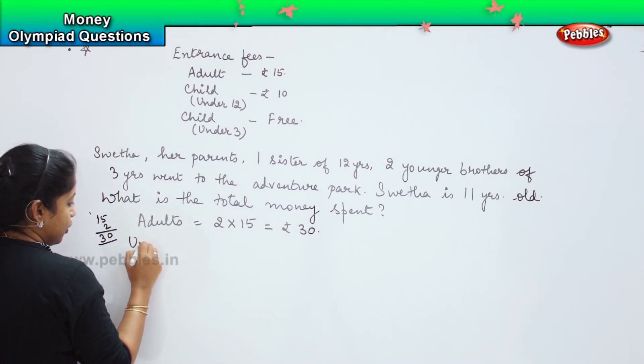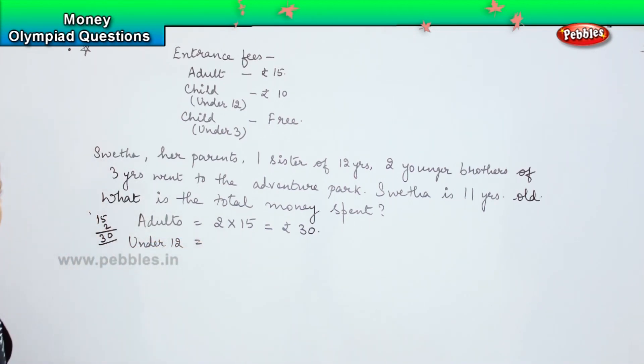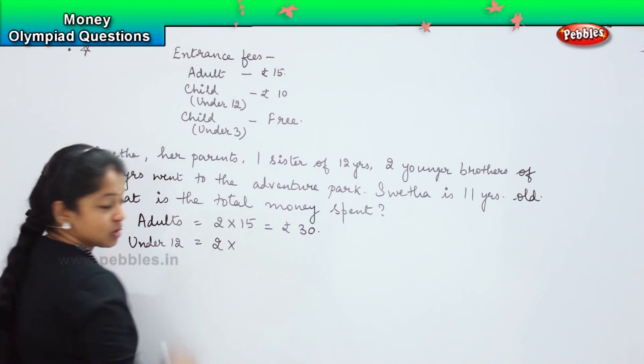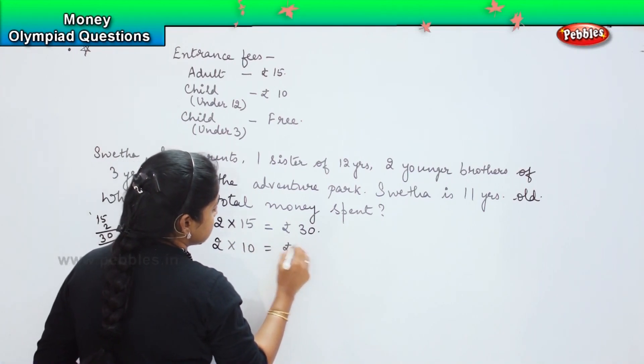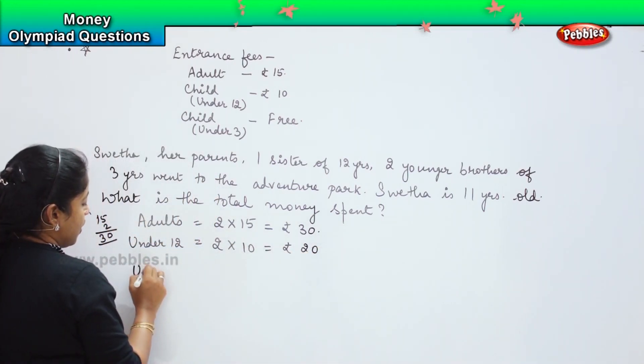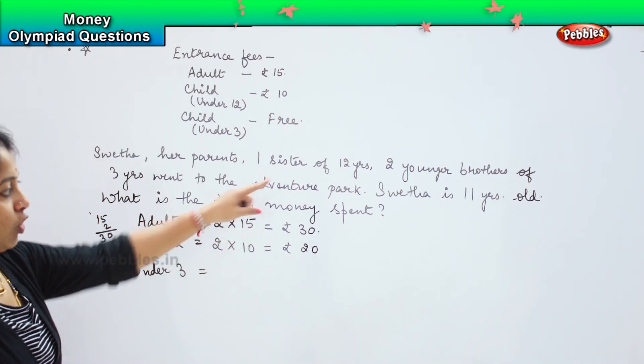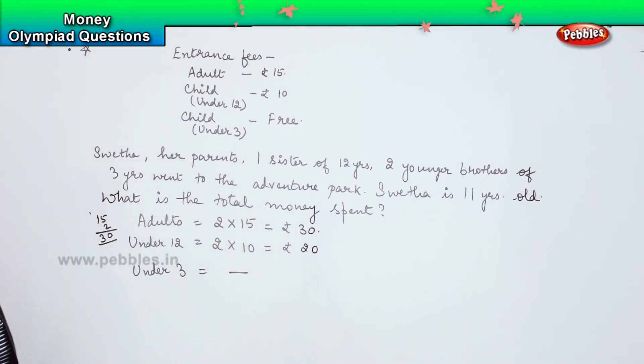Now you have to see for children who are under 12, that is 12 and below. So how many are there? Shweta is 11 years and her sister is 12 years. So you have again, 2 people of 12 years old and what is the rate here? It is 10 rupees. So 10 into 2 is 20 and then you have people who are under 3. Her 2 younger brothers. And it is free.